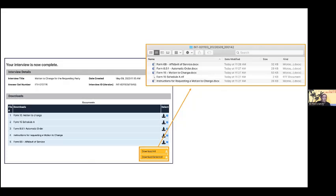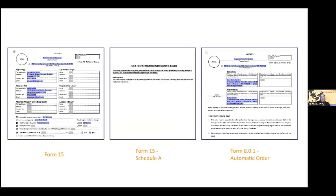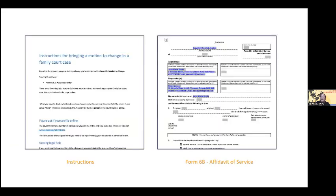Once the user ends the interview, they are directed to their dashboard where they can download their completed forms and an instruction document outlining next steps. A user can download some or all of the output documents directly to their computer. We have the required court forms produced by the pathway, and the pathway also outputs instructions for bringing a motion to change in a family law court case. This pathway also provides a partially completed form that the user will need to complete after the forms are served on the other party.